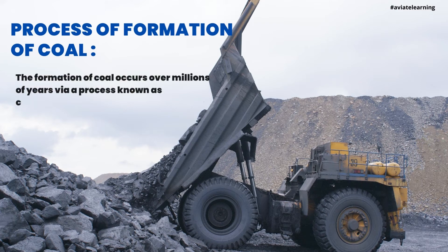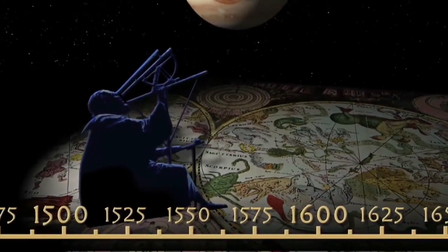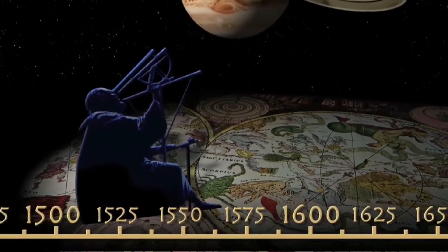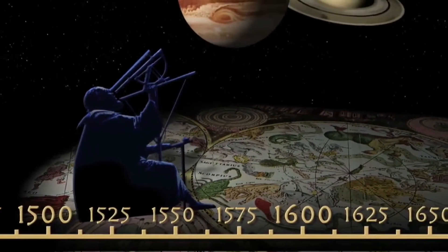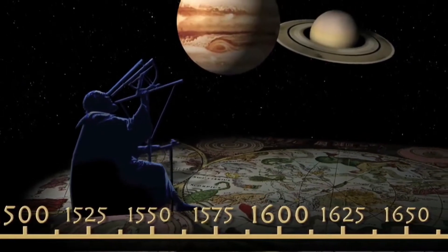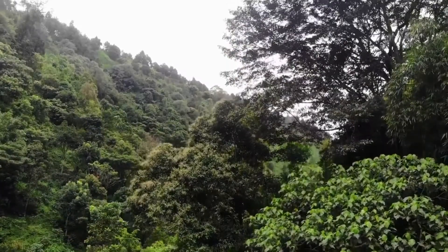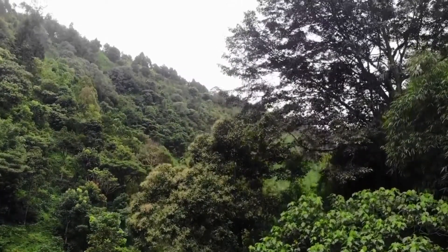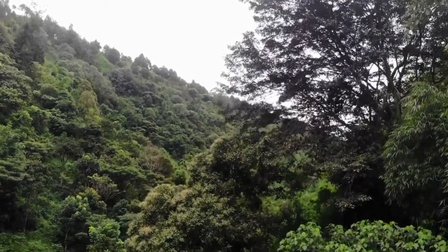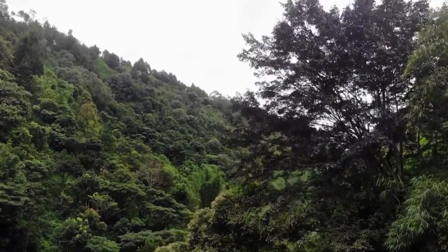If you want to know the process of formation of coal, watch the whole video. In order to know the whole process of formation of coal, we will have to go millions of years back in the past. About 300 million years ago, the earth was fully covered with dense forests present in low-lying wetland areas.